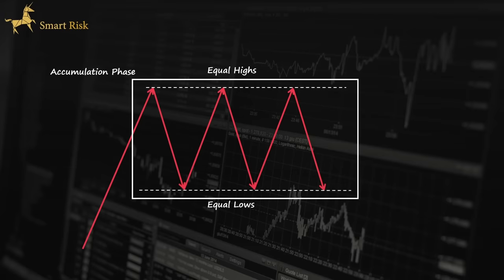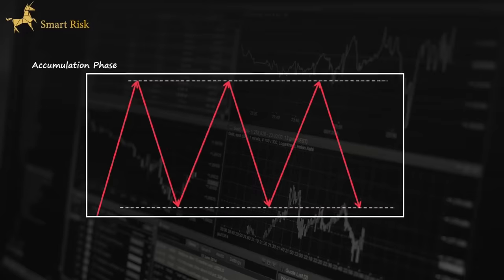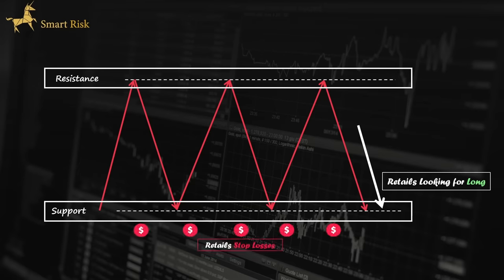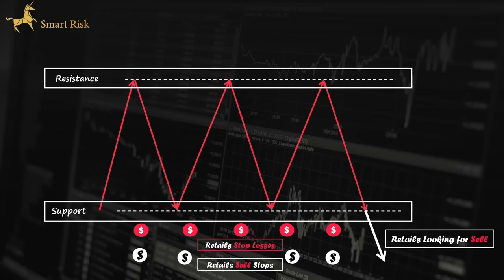Imagine price entering into the accumulation phase. Here, price has created equal highs and equal lows before starting the markup or markdown phase. We see a support at the bottom and a resistance level at the top of the structure. Retail traders are looking to buy when price reaches the support level and they place their stop-loss below the support. Hence, we have a great liquidity pool underneath the support level belonging to the stop-losses of buyers. It also includes sell-stop orders from retail traders who are looking to sell if price breaks through the support level to the downside, believing the markdown phase will begin.